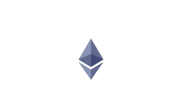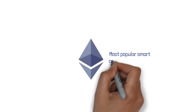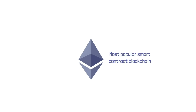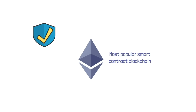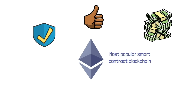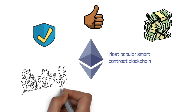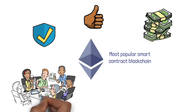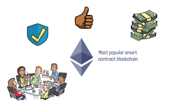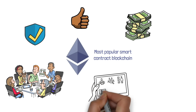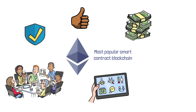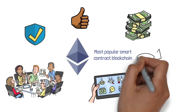You've got Ethereum, the most popular smart contract blockchain. It's secure, it works well, and there's a ton of value on it — billions of dollars. Huge developer community. Very decentralized. Tons of apps already built. But it's slow.